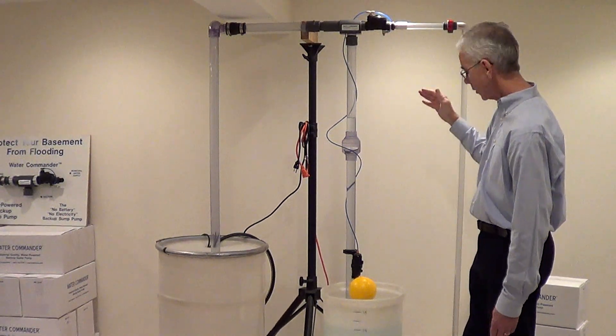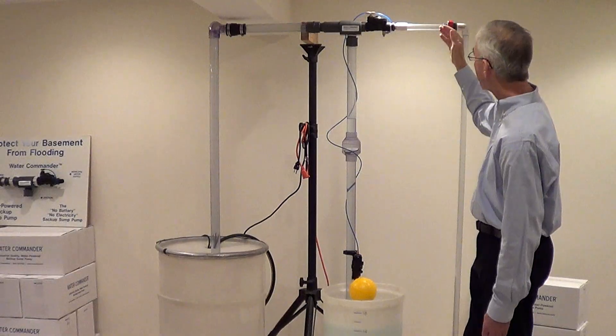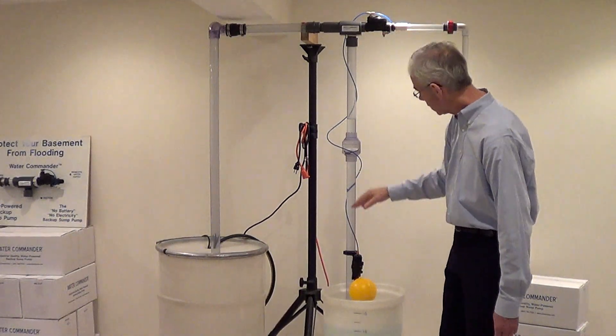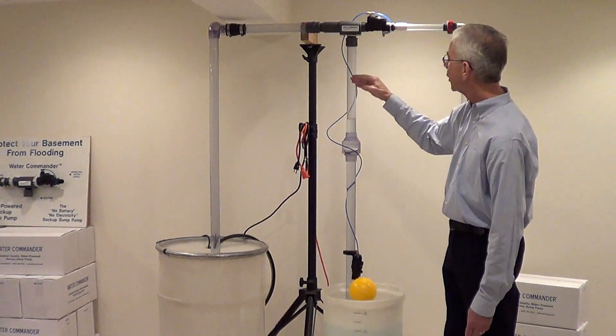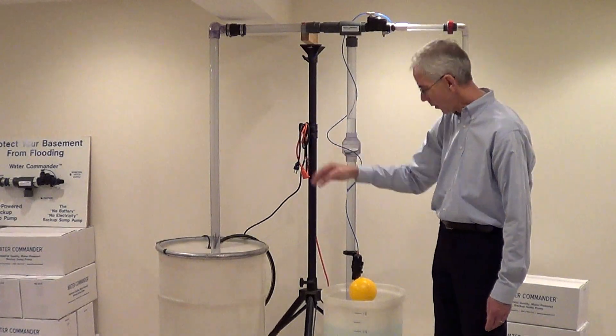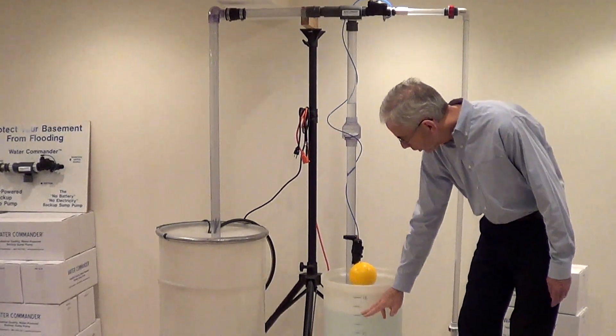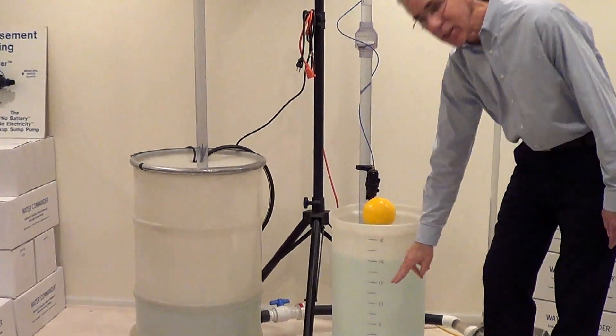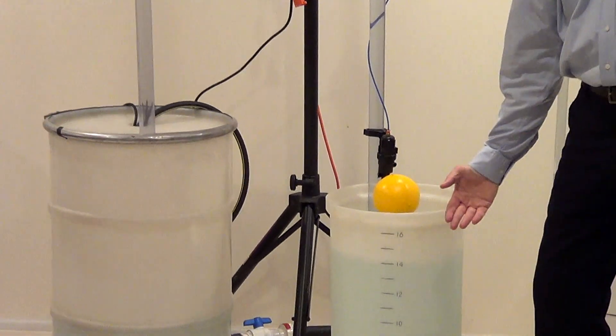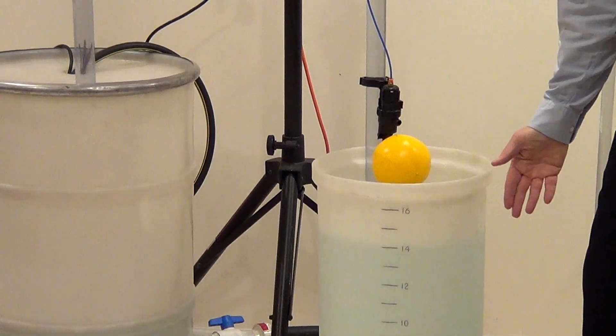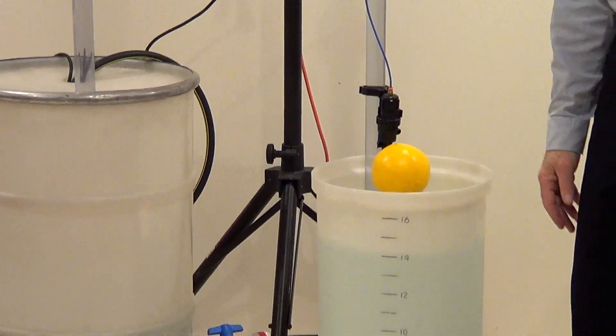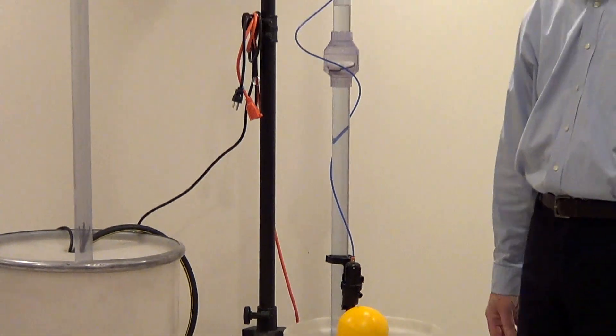As the pump runs, we'll turn it on, you'll see water rise up and come through this pipe and exit there. Our sump, each line on our sump represents one gallon so you'll get an idea of how fast the Water Commander is pumping. This is a very typical pumping rate in a standard home. So here we go.